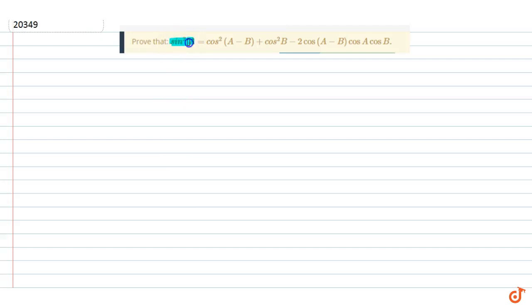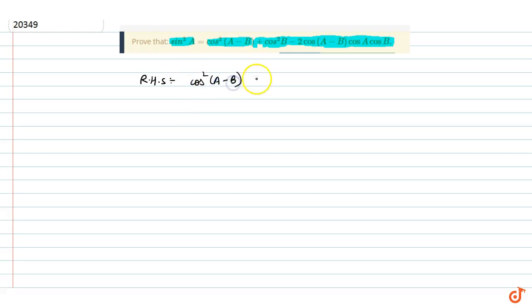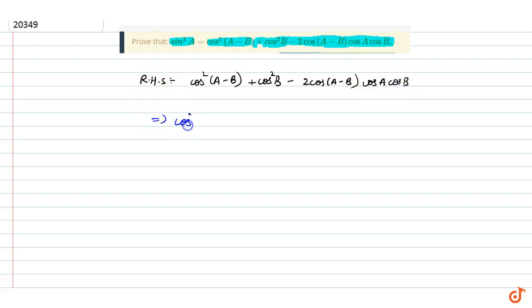In this question, we have to prove that sin squared a equals cos squared (a minus b) plus cos squared b minus 2 cos(a minus b) into cos a cos b. We have to prove that sin squared (a minus b) plus cos squared (a minus b) minus 2 cos(a minus b) into cos a cos b.